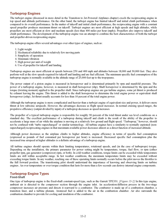The power output of a piston engine is measured in horsepower and is determined primarily by RPM and manifold pressure. The power of a turboprop engine, however, is measured in shaft horsepower (SHP). Shaft horsepower is determined by the RPM and the torque (twisting moment) applied to the propeller shaft. Since turboprop engines are gas turbine engines, some jet thrust is produced by exhaust leaving the engine. This thrust is added to the shaft horsepower to determine the total engine power, or equivalent shaft horsepower. Jet thrust usually accounts for less than 10% of the total engine power. Although the turboprop engine is more complicated and heavier than a turbojet engine of equivalent size and power, it delivers more thrust at low subsonic air speeds. However, the advantages decrease as flight speed increases.